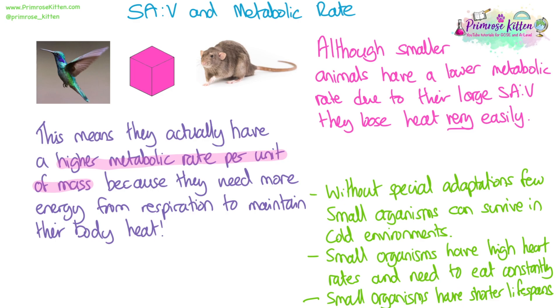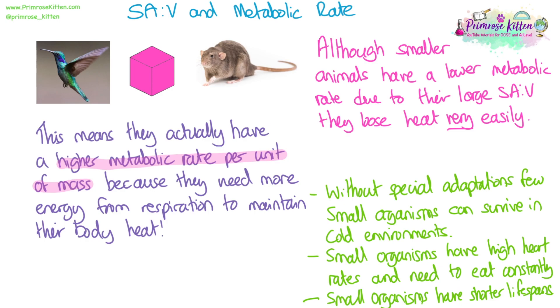Think about the opposite effect — something like an elephant or a blue whale that is really large. Their metabolic rate per unit of mass will be a lot slower, and so they do tend to live a really long time.